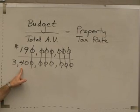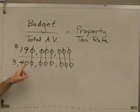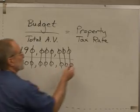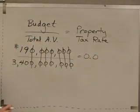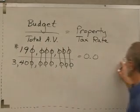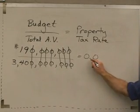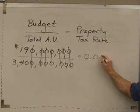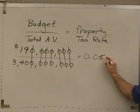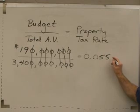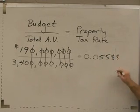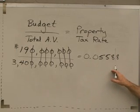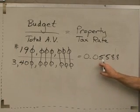That's much easier to punch in and make fewer mistakes. So everybody punch in 19 divided by 340. We want to express that as a decimal and round it to four decimal places. The digits after 0.05 are 5, 8, 8 — so rounding to four decimal places, this looks like 0.0559.